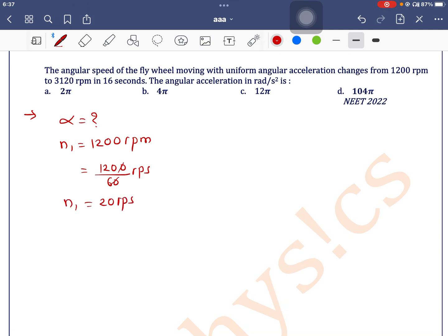Now final speed is given as 3120 rpm, so we can write 3120 divided by 60 rps. The zeros cancel, 6 times 5 is 30, 6 times 2 is 12, giving us 52 rps.